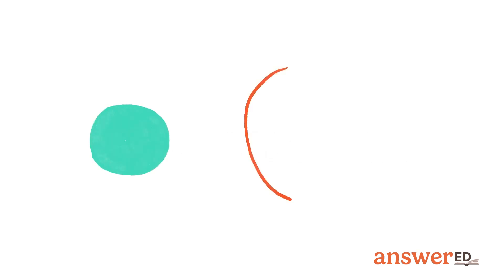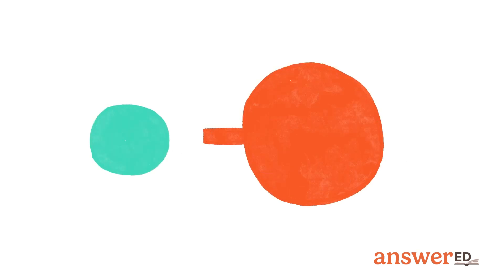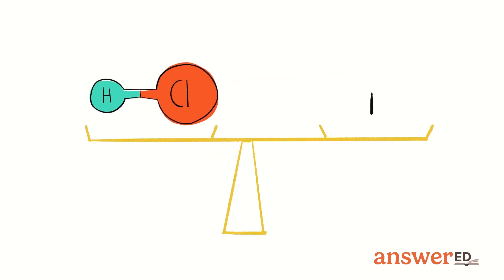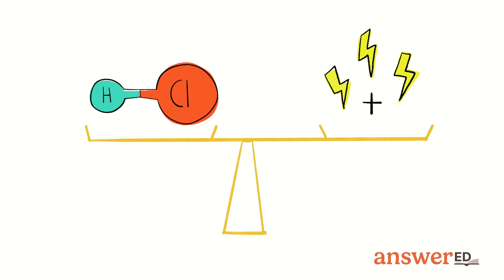We are going to define bond energy and understand how it works using the hydrogen-chlorine bond as an example. Bond energy is the amount of energy needed to overcome the attractive forces between hydrogen and chlorine atoms in a mole of hydrogen-chloride molecules when they're in a gaseous state.